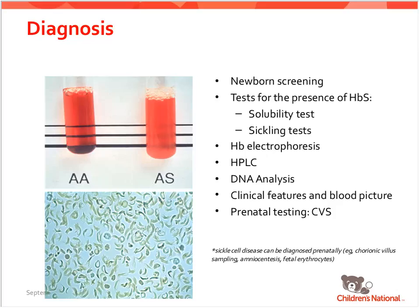Prenatal diagnosis of sickle cell disease is possible via chorionic villus sampling and other tests. This is noted in the ABP content outline — a board question may ask whether sickle cell can be diagnosed prenatally.